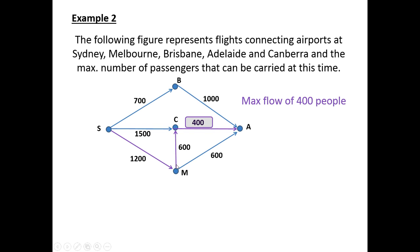Likewise, we can go from Sydney to Melbourne to Canberra and Adelaide. Sounds a little bit zigzaggy, but it's one of the connections. 1200 can get on from Sydney and fly to Melbourne, only 600 from Melbourne to Canberra. But again, we have a restriction of 400 passengers from Canberra to Adelaide. So this particular purple path has a maximum flow of 400 people.